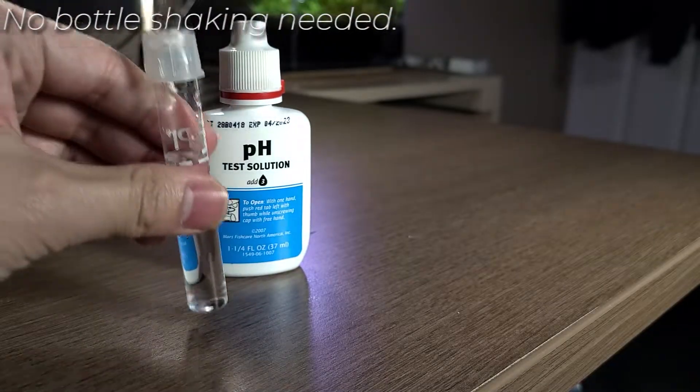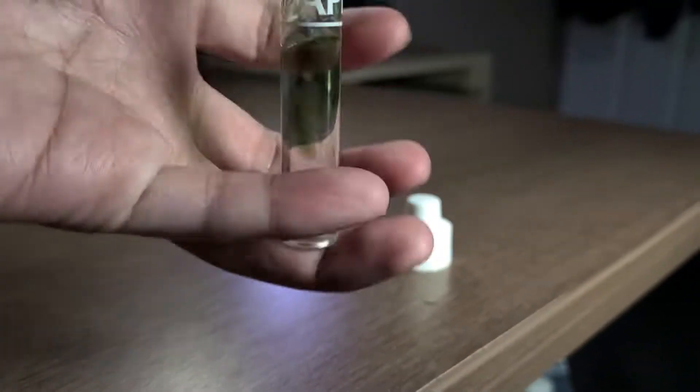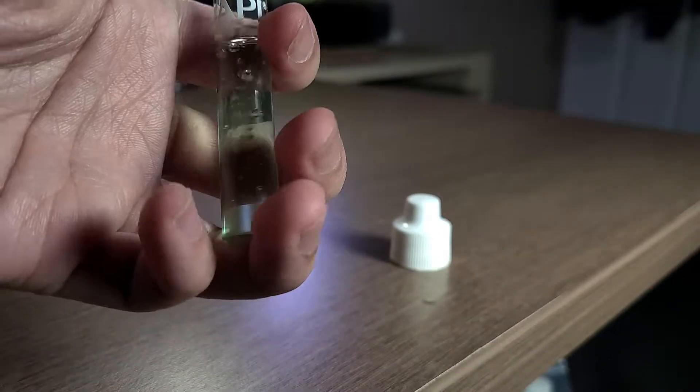For pH, there's no need to shake the bottle. Just add three drops, and once that's done, just give it a little shake and the results will be instantaneous.